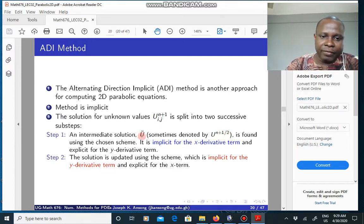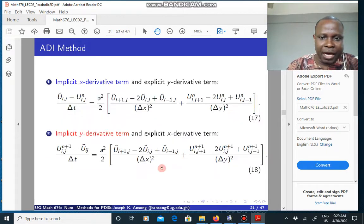You solve the first one for U tilde, which is an intermediate value. In that way, you set up your scheme such that it is implicit in the x direction or in the x terms, and then it is explicit in the y. Once you have the intermediate solution, you go on to solve for the actual solution in the next step, step two, and it is set up in a different direction such that it is implicit for the y derivative terms and explicit for the x terms.